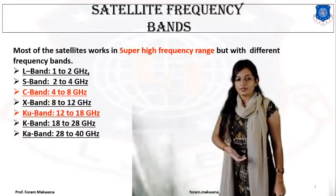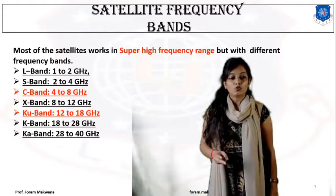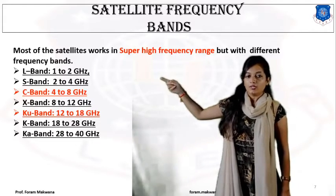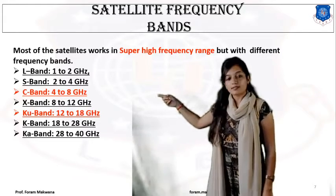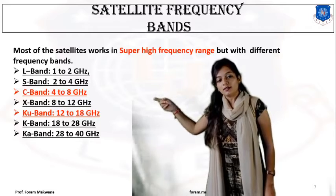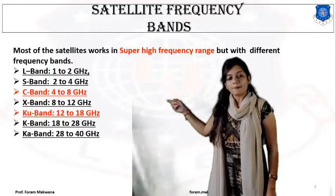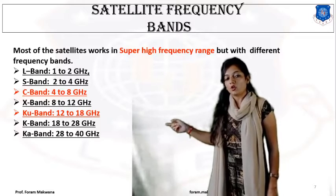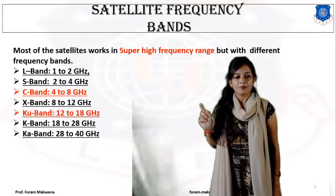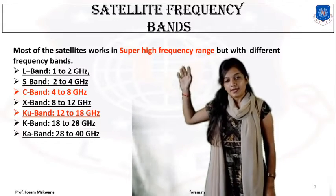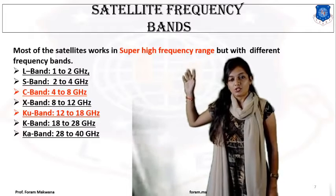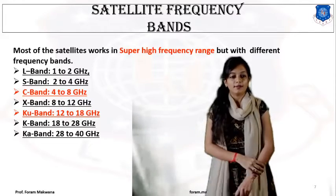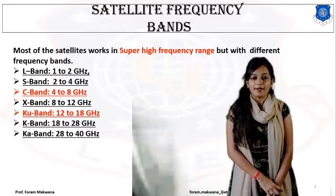Out of these frequency bands, we are going to use two bands for satellite communication. Earlier, the C band was used. Nowadays, ISRO is working on the Ku band and Ka band. So for satellite communication, we use Ku band and, nowadays, Ka band.